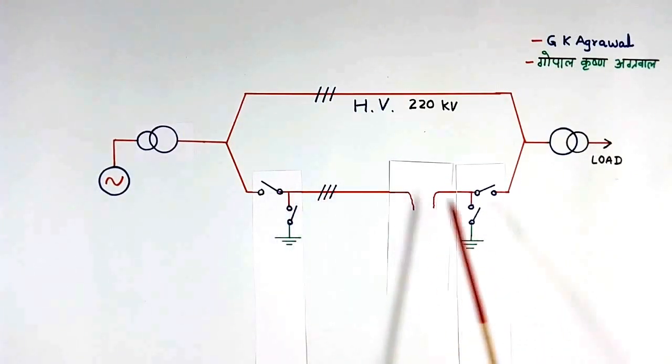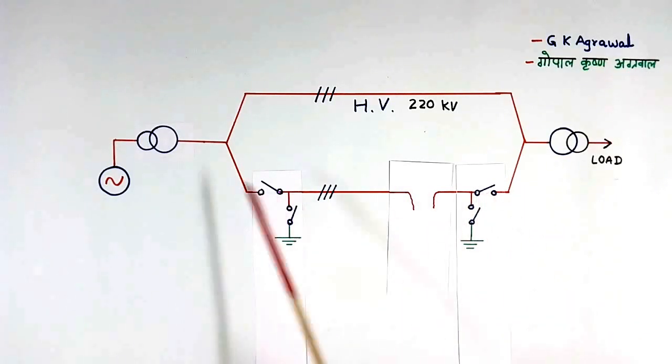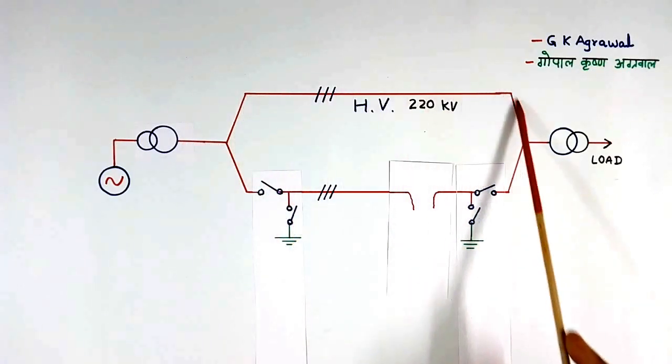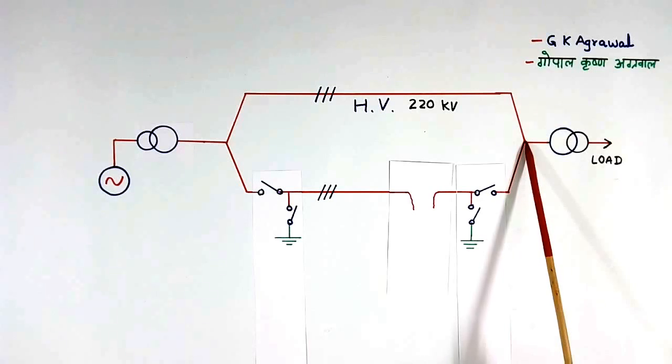During fault in one line, we use only one transmission line. So power transmission capacity of the system becomes less.